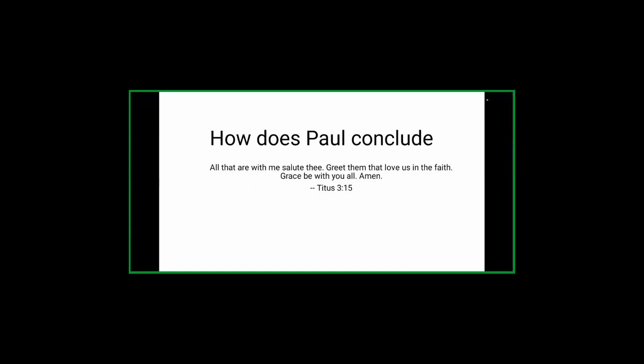Finally, Paul concludes the letter as he began — with order. He introduced himself, addressed the recipient, provided the body of the letter, and now concludes. He says: 'All that are with me salute you' — Tychicus and Artemas were with him. He greets all those in Crete who love them in faith, and closes: 'Grace be with you all.' That is how Paul concludes his letter.